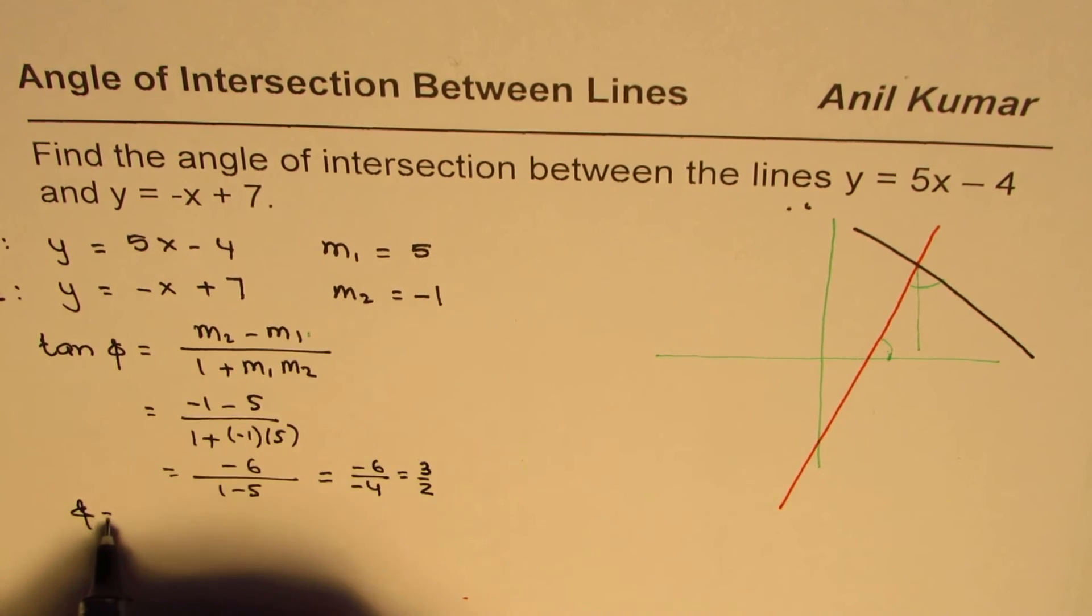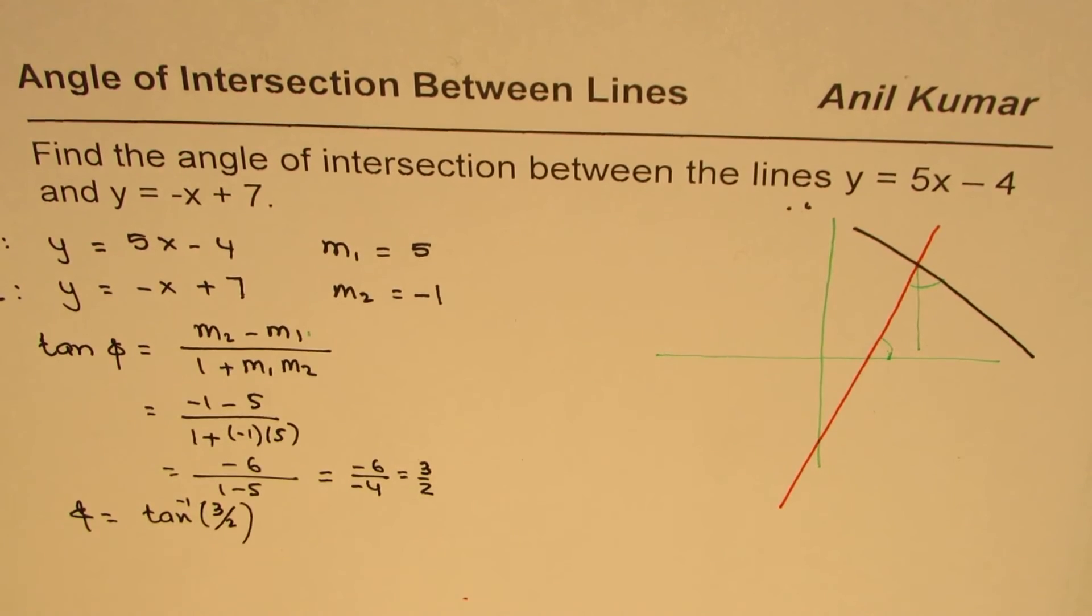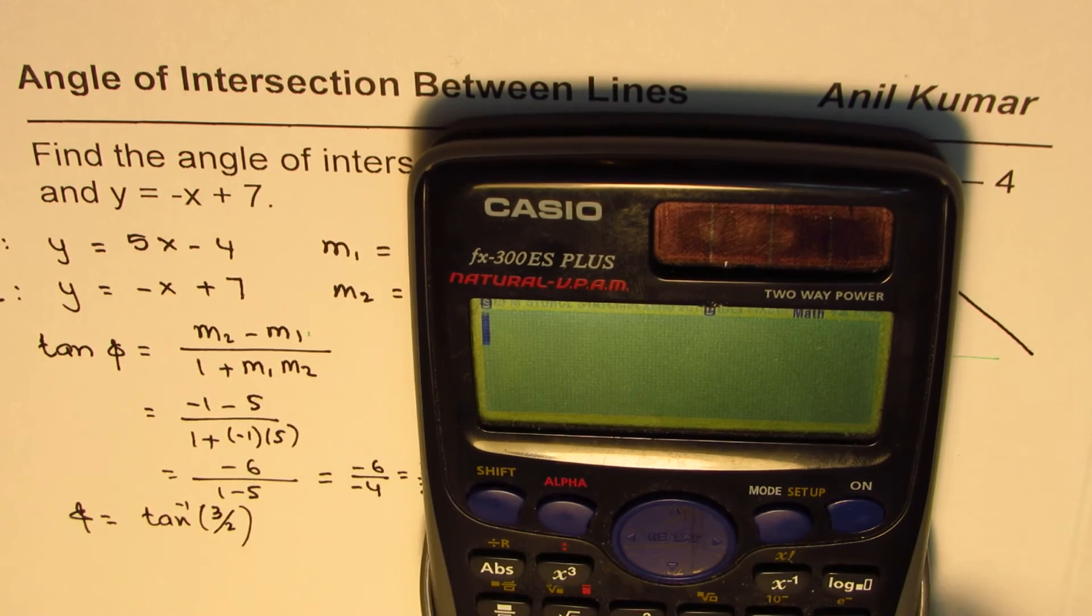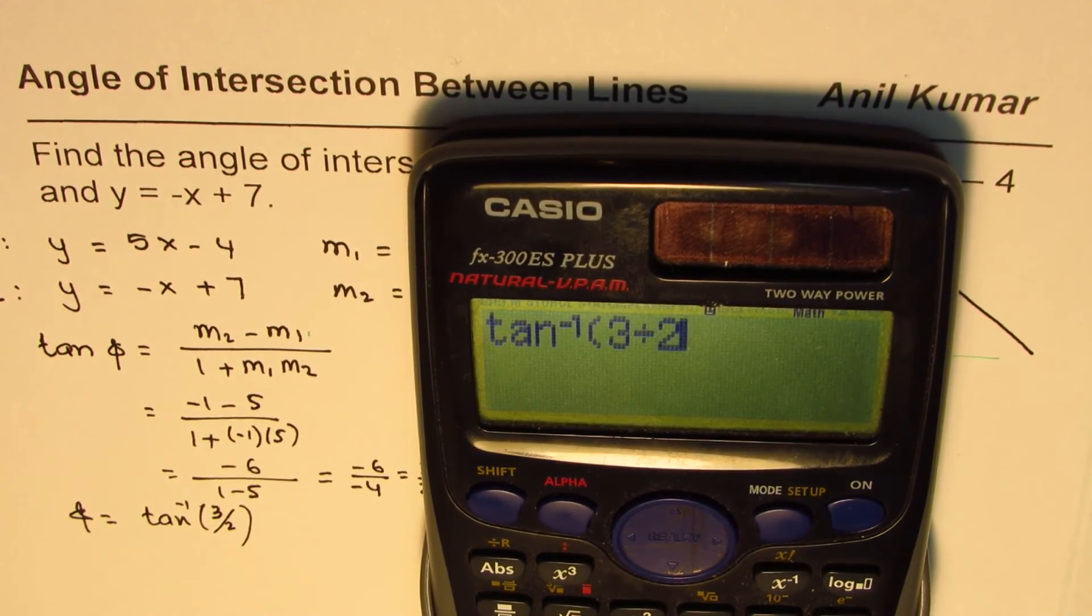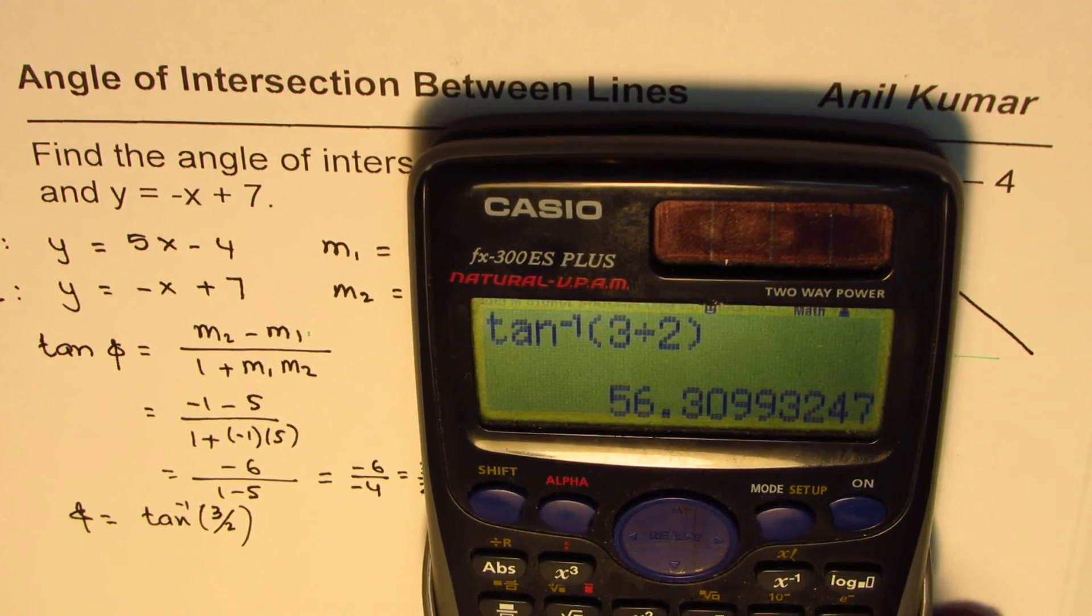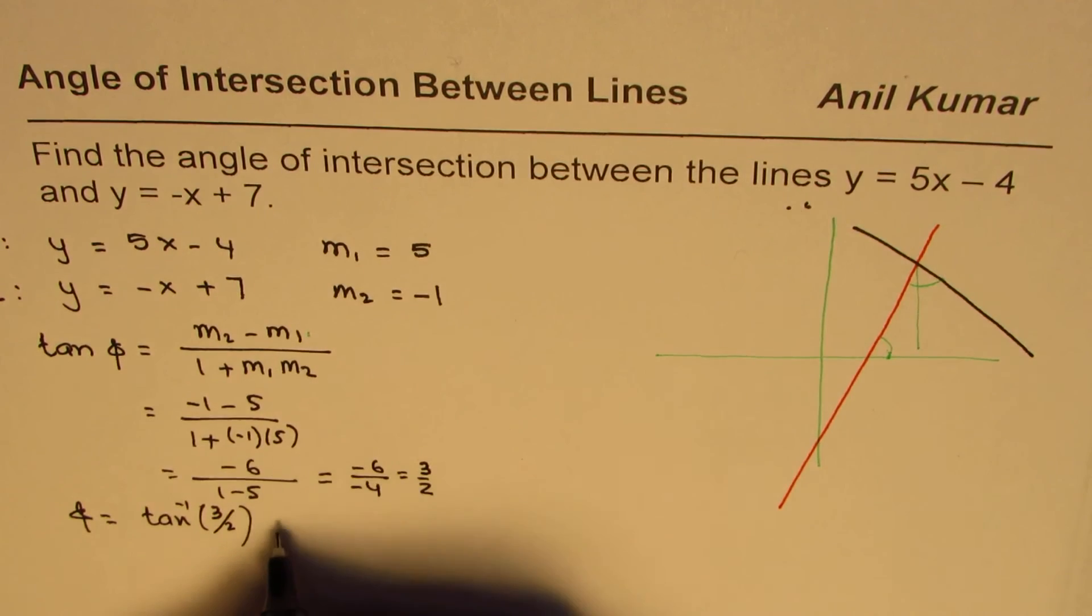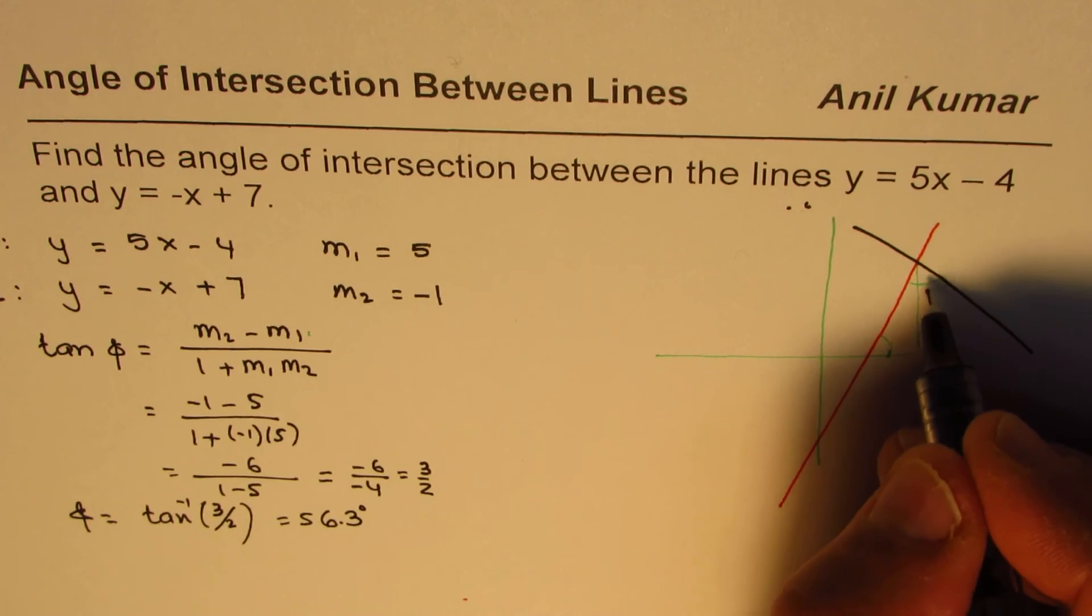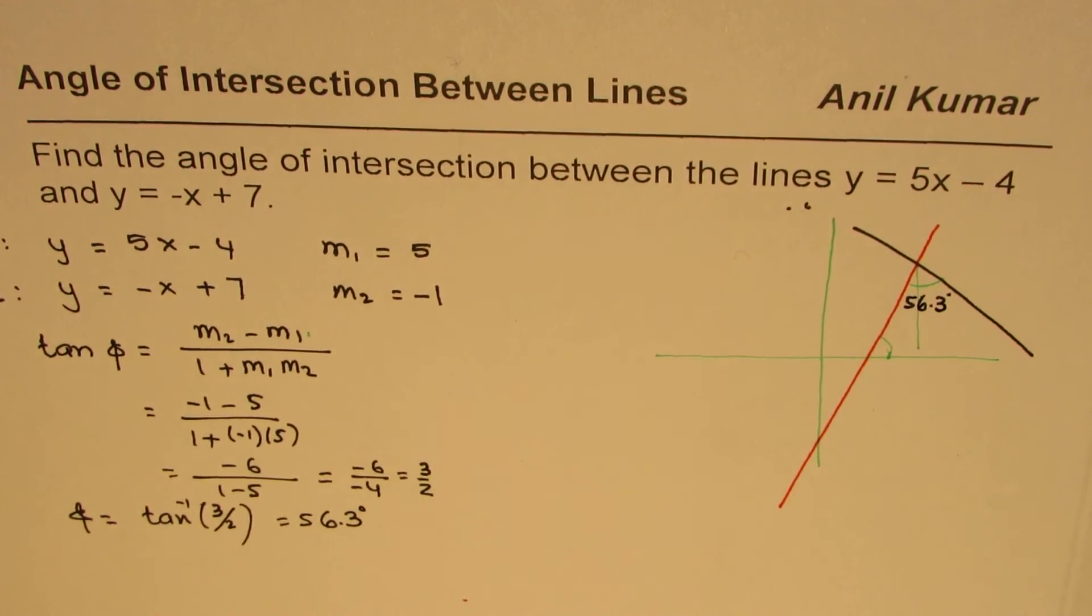So phi, the angle, is tan inverse of 3 over 2. So let's use calculator to find this angle. It is tan inverse, within brackets, 3, or 1.5, 3 divided by 2 is equal to 56.3. So this is 56.3 degrees. So we can say this angle, which is the acute angle here, is 56.3 degrees.